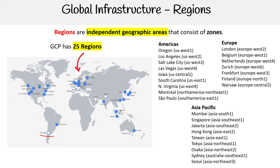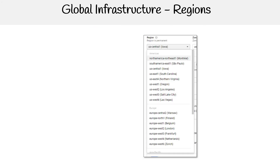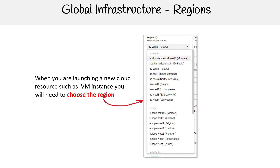So there are quite a few of them. A lot of people are used to running in US West or US East — I'm always running in the Canada region because that's where I'm from. When you actually want to use a region, it's as simple as choosing it. So if you're launching a virtual machine with Compute Engine, you just choose the region you want to go into.